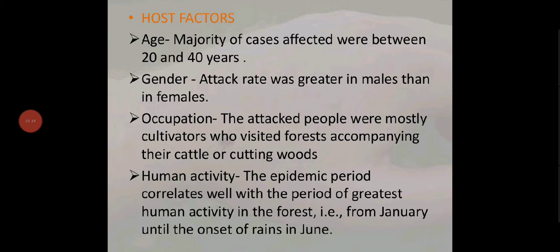Regarding host factors: the majority of cases affected were between 20 to 40 years of age. The rate was greater in males than females because they worked in forest areas. Occupationally, the attacked people were mostly cultivators who visited forests accompanying their cattle or cutting wood. The epidemic period correlates with the period of greatest human activity in the forest, from January until the onset of rains in June — during this time, tick activity increases and human activity is also high, resulting in more transmission.